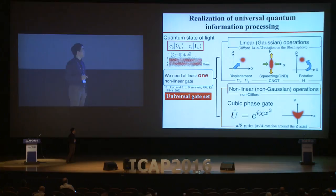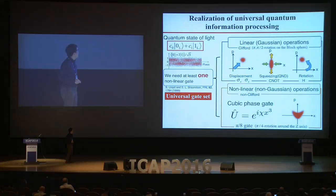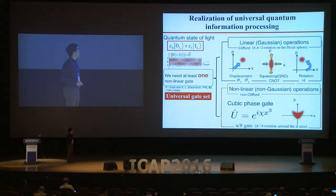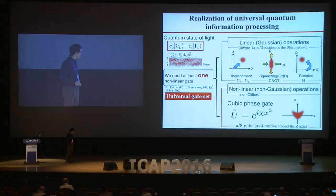By using these methodologies, we make quantum information processing. Information is encoded as a qubit, and our quantum information processor implements a universal gate set of continuous variable operations. There are two types of operations. One is linear or Gaussian operations: displacement — phase-space displacement, which in qubit language is Pauli-X and Pauli-Z — squeezing or QND, which is CZ, and phase-space rotation, which corresponds to the Hadamard gate. The other type is one nonlinear or non-Gaussian operation — the cubic phase gate, which is the continuous variable version of the π/8 gate.